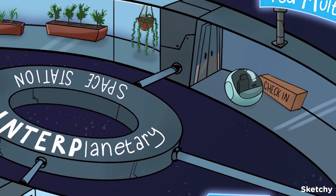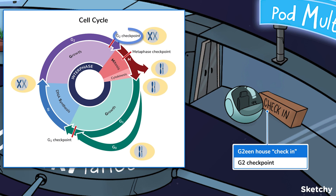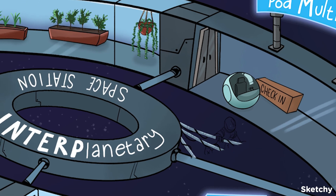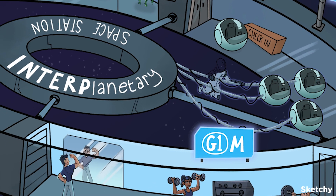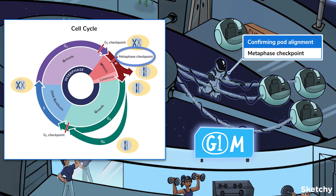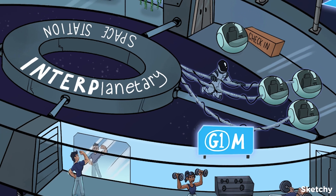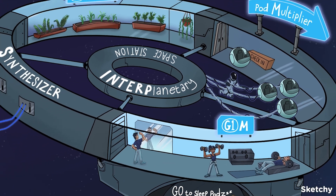The G2 checkpoint comes at the end of G2. It makes sure the cell has grown sufficiently and replicated all the organelles to support two daughter cells in preparation for mitosis. Last but not least is the metaphase checkpoint, also called the spindle checkpoint, which occurs at the end of metaphase. It makes sure that each chromosome is properly attached to the spindle and lined up at the metaphase plate.